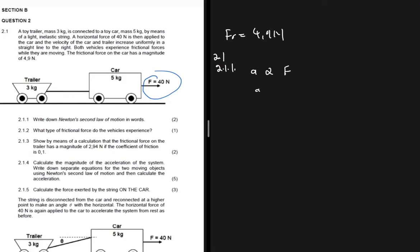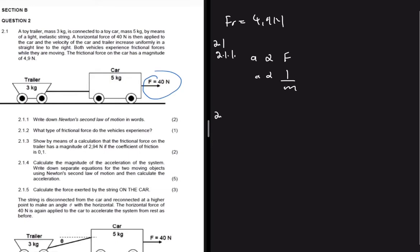Question 2.1.2 asks what type of frictional force the vehicles experience. We are told that when these vehicles start moving they are experiencing a frictional force. The frictional force associated with moving objects is kinetic friction. If they were stationary, then we would have static friction.